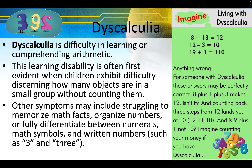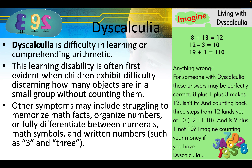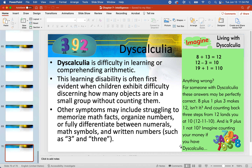Dyscalculia is difficulty in learning or comprehending arithmetic. This learning disability is often first evident when children exhibit difficulty discerning how many objects are in a small group without counting them. Other symptoms may include struggling to memorize math facts, organize numbers, or fully differentiate between numerals, math symbols, and written letters — such as the numeral 3 and the letter e. And that is the end of the chapter.